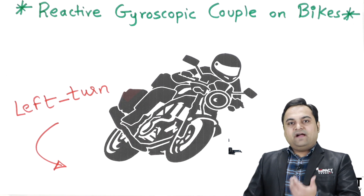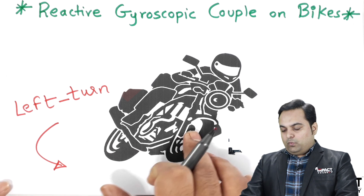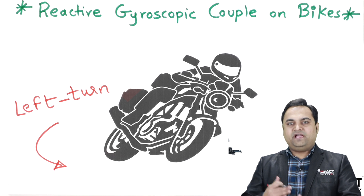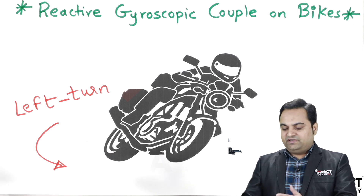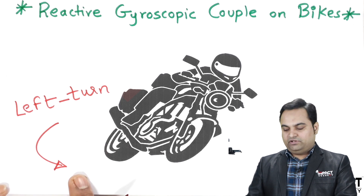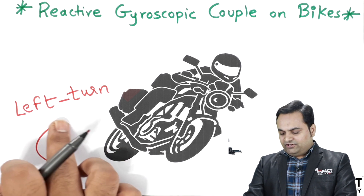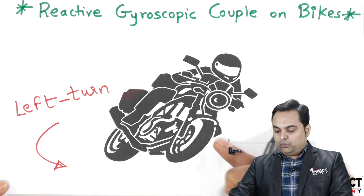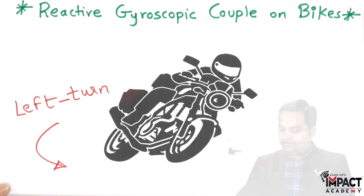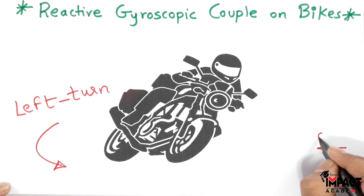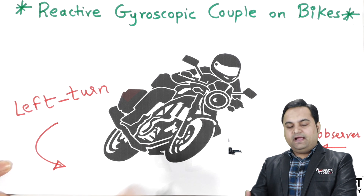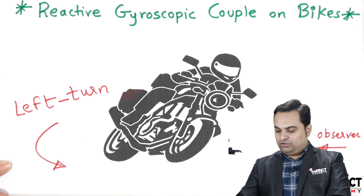We have to observe this as the rider — we have to behave as the rider, see that we are riding the bike and taking the left turn, so we get the direction of this left turn. Next, after the left turn is fixed, the front wheel as seen by an observer from outside should be turning in an anti-clockwise direction.